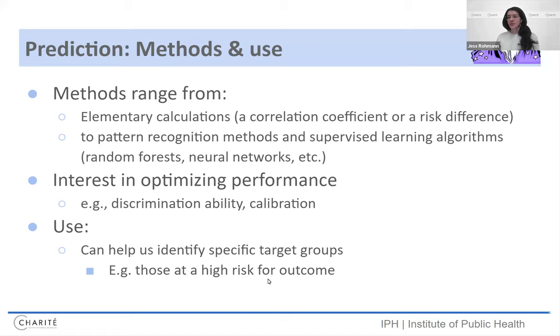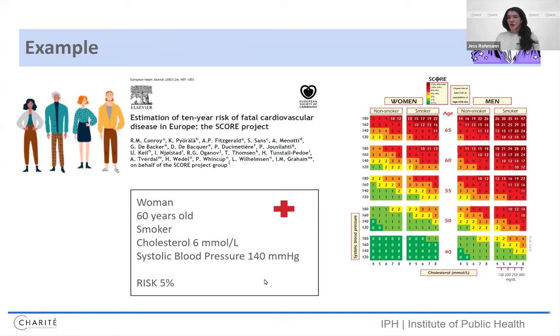And why do we use prediction? Why is it interesting as a task? Well, it can help us identify specific target groups such as those who are at high risk for an outcome. So I brought the score. Maybe some of you have heard of this, the score score, probably the most famous clinical risk prediction model for fatal cardiovascular disease in Europe. And the idea here is that with relatively few parameters, when you know, for example, something about a person, you can, based on the data of others, predict the risk of having a fatal cardiovascular event within 10 years.